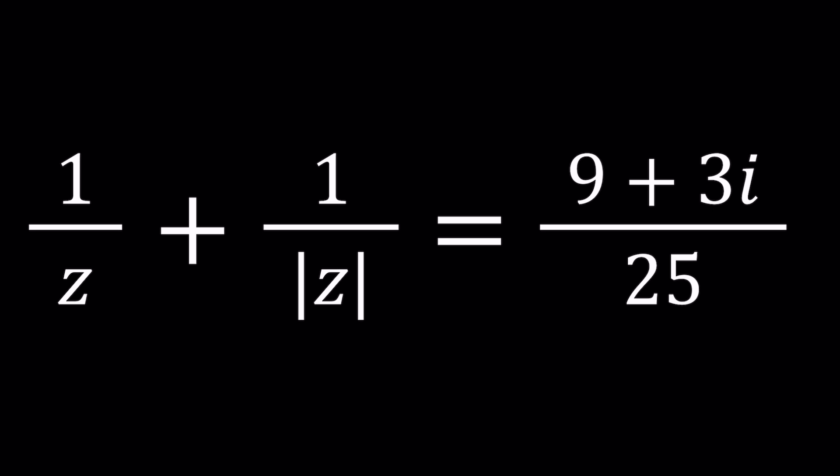So we have 1 over z plus 1 over absolute value of z equals 9 plus 3i divided by 25. And what are we going to solve for? We're going to solve for z. What is z? z is a complex number.